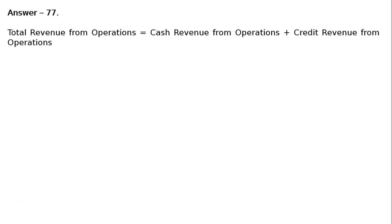Question 77: From the following information, calculate inventory turnover ratio. Credit revenue from operations is ₹1 lakh and cash revenue from operations is ₹3 lakhs. Closing inventory was three times the opening inventory, and opening inventory was 10% of the cost of revenue from operations. Total revenue from operations equals cash plus credit, that is ₹3 lakhs plus ₹1 lakh, which equals ₹4 lakhs.